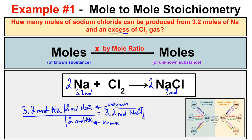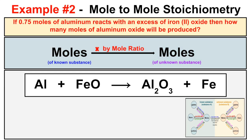So if 3.2 moles of sodium react with an excess of chlorine, it will produce 3.2 moles of sodium chloride. In the second example: if 0.75 moles of aluminum reacts with an excess of iron(II) oxide, how many moles of aluminum oxide will be produced? Balancing the chemical equation gives: 2Al + 3FeO → Al2O3 + 3Fe. We have 0.75 moles of aluminum and want to find moles of Al2O3.